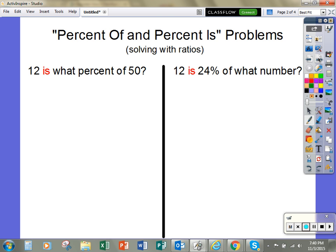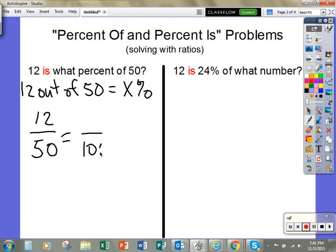12 is what percent of 50? I'm going to rewrite this as 12 out of 50 equals what percent? I'm going to use a variable x percent because that is my unknown. I can write 12 out of 50 as a fraction or a ratio, 12 over 50. And I know that percent is always out of 100, so I'm going to put 100 as my denominator or the bottom part of my ratio. And I'm going to put an x on the top.